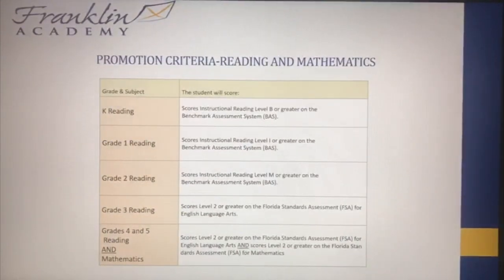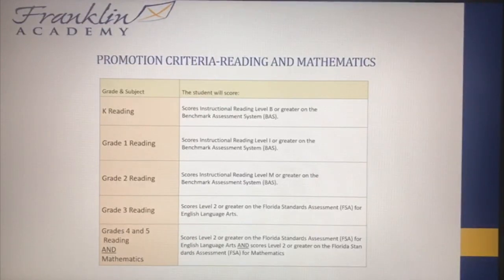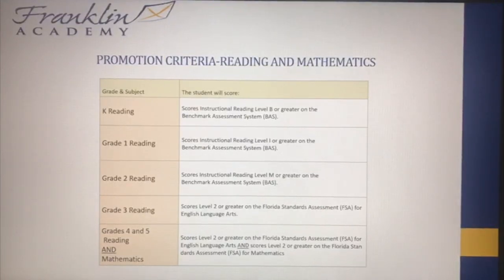In a nutshell, what needs to happen at the end of the year for students to be promoted: in kindergarten, the BAS score needs to be a letter B or greater. For first grade, the BAS should be a level I. For second grade, the BAS score should be at least level M. Third grade is a mandatory retention year — students need to score a level two or greater on the FSA English Language Arts. In fourth and fifth grade, students need a level two or greater in both FSA Language Arts and Mathematics.